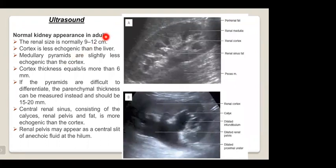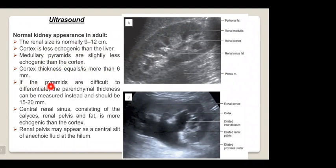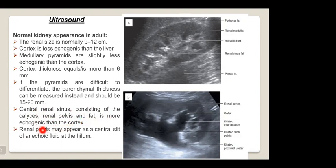On ultrasound, the normal adult kidney is about 9 to 12 cm in size. The cortex is less echogenic than the liver; medullary pyramids are slightly less echogenic than the cortex. Cortex thickness is equal to or more than 6 mm; if pyramids are difficult to differentiate, parenchymal thickness can be measured instead and should be 15 to 20 mm. The central renal sinus consisting of the calyces, renal pelvis, and fat is more echogenic than the cortex.